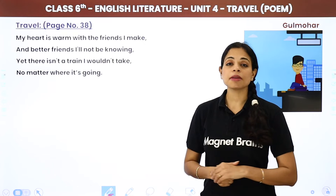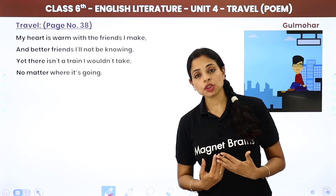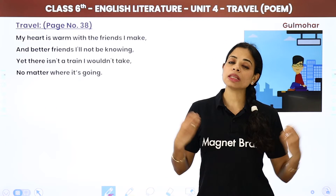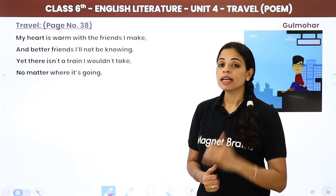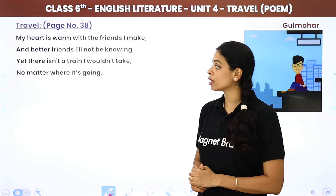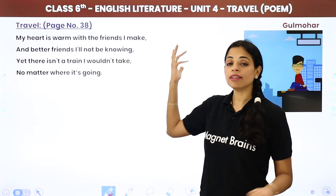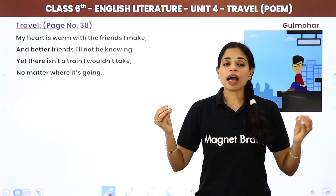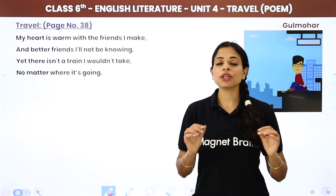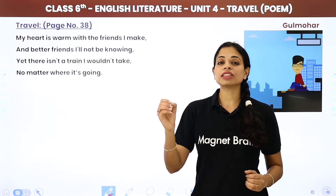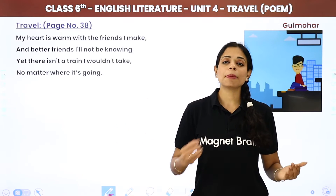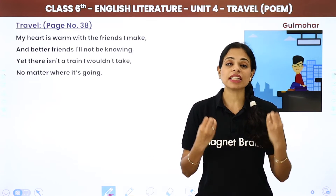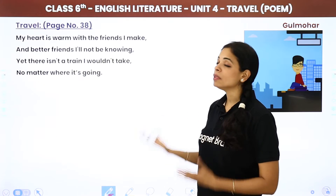My heart is warm with the friends I make, and better friends I will not be knowing. Yet there isn't a train I wouldn't take, no matter where it is going. Her heart is warm and happy with the friends around her. But there are perhaps better friends she could make if she travels. There is no train she would not board — she doesn't care about the destination. She just wants to travel, to go from here, to explore new places and meet new people.